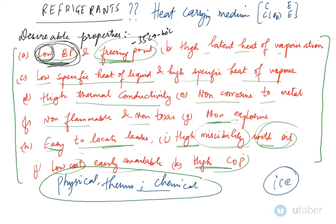The next is your high latent heat of vaporization. Now what is latent heat? Latent heat is that heat which is used up when there is a phase change of a substance. The refrigerant should have high latent heat of vaporization at the evaporator temperature because the refrigerant is changing phase when it is going into the evaporator.